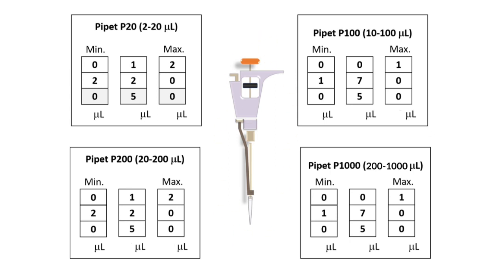Here's a micropipettor. You cannot use one micropipettor to work with any volume. We usually see the P20, which works between 2 and 20 microliters; P100, between 10 and 100 microliters; P200, which works with volumes between 20 and 200 microliters; and P1000, which works between 200 and 1000 microliters.